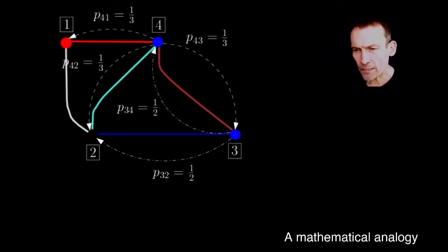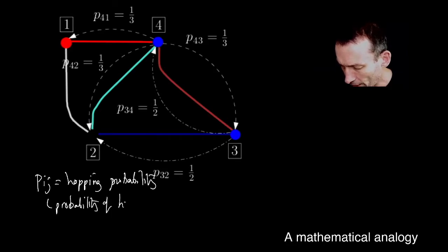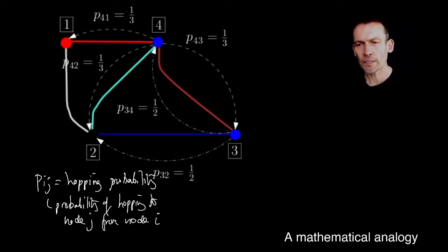Here's our mini-tube again and I've introduced a new concept here, Pij. Pij is what I'm going to call a hopping probability, and it's the probability of hopping to node j from node i.